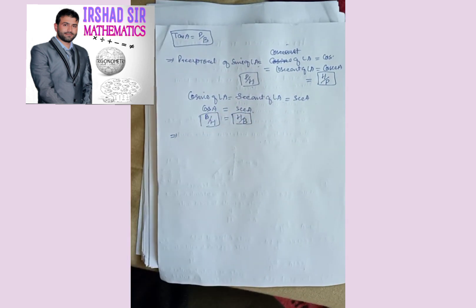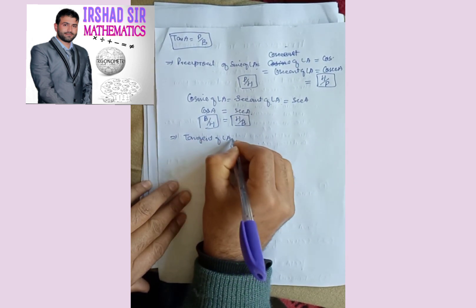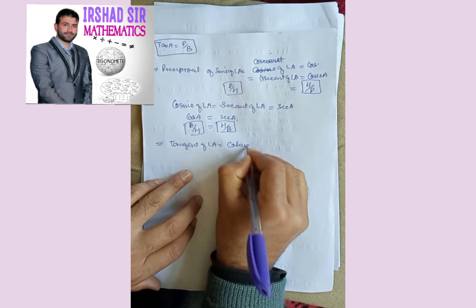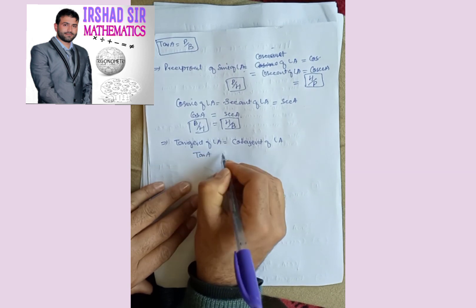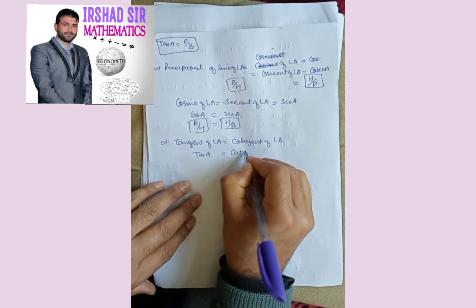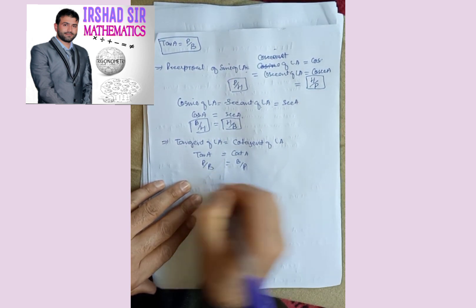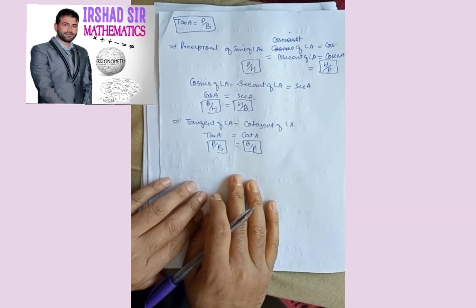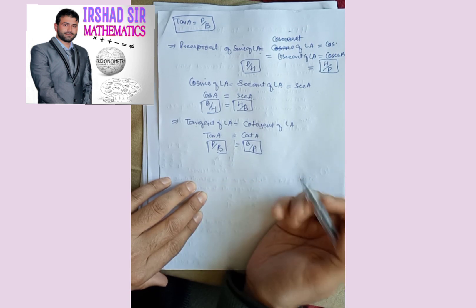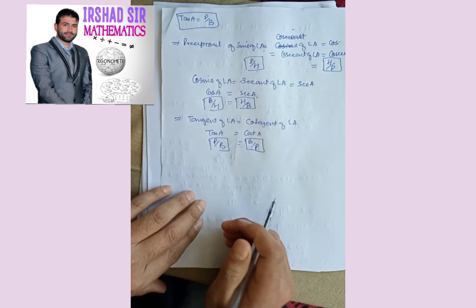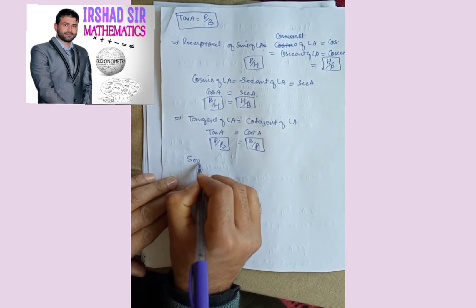The third reciprocal: tangent of angle A has the reciprocal cotangent of angle A, abbreviated as cot A. If tan A is perpendicular by base, then cot A is base by perpendicular. So tan A is perpendicular by base and cot A is base by perpendicular.